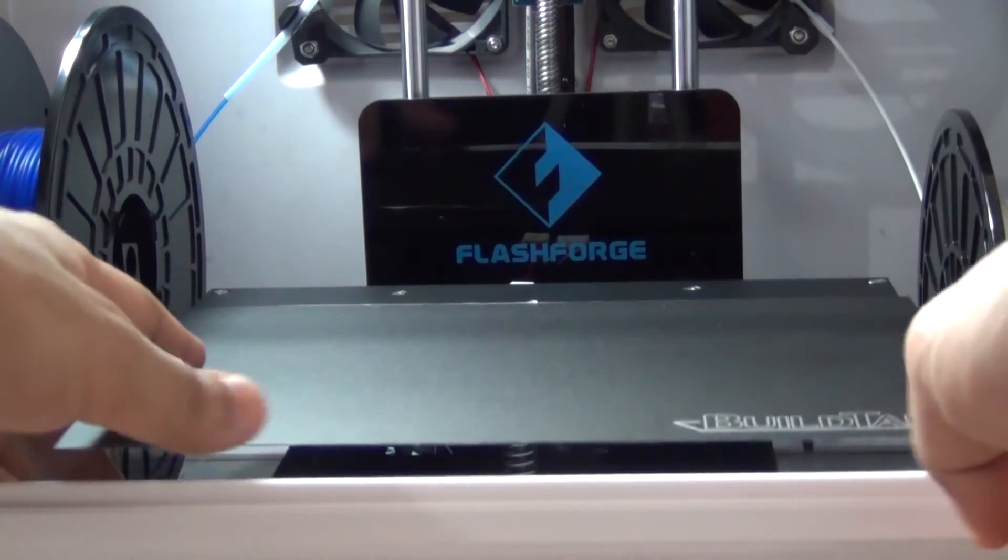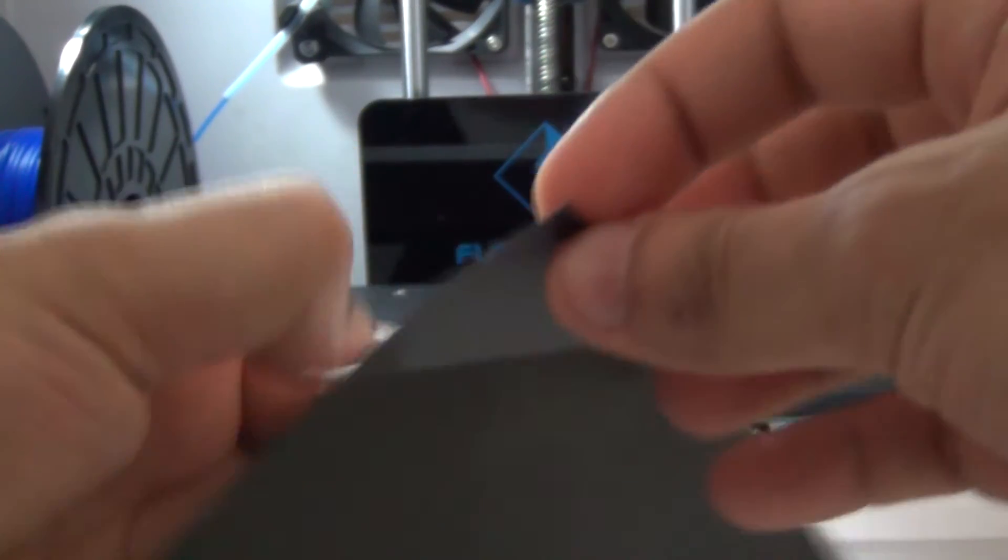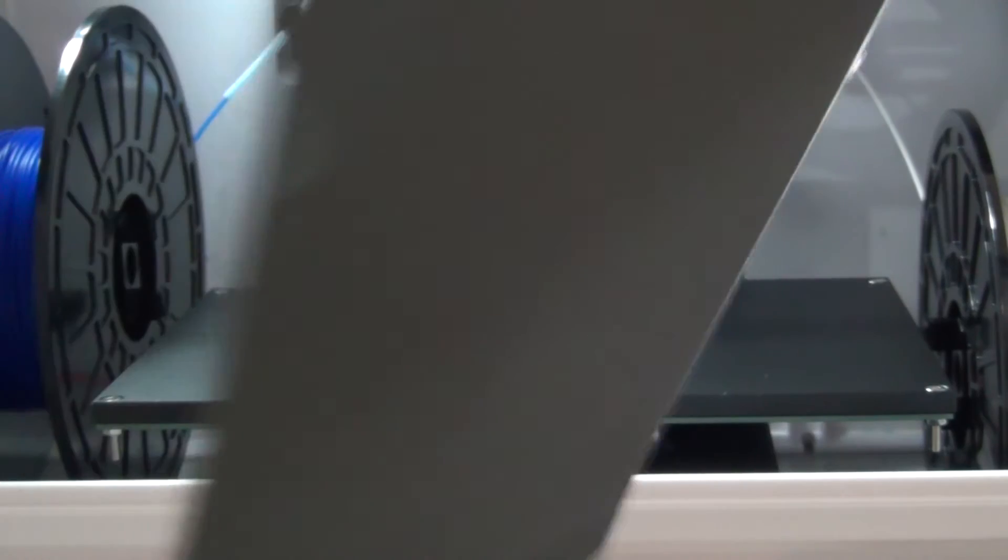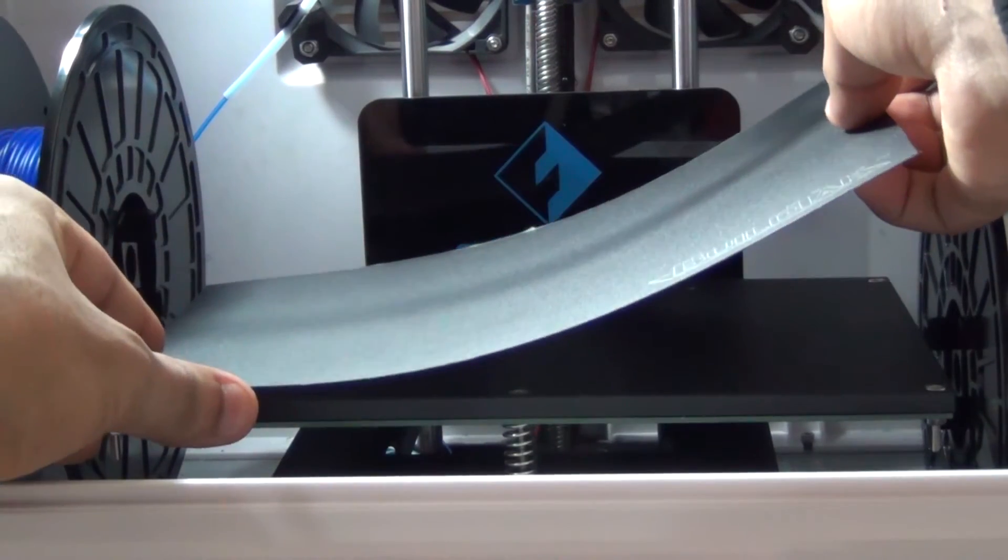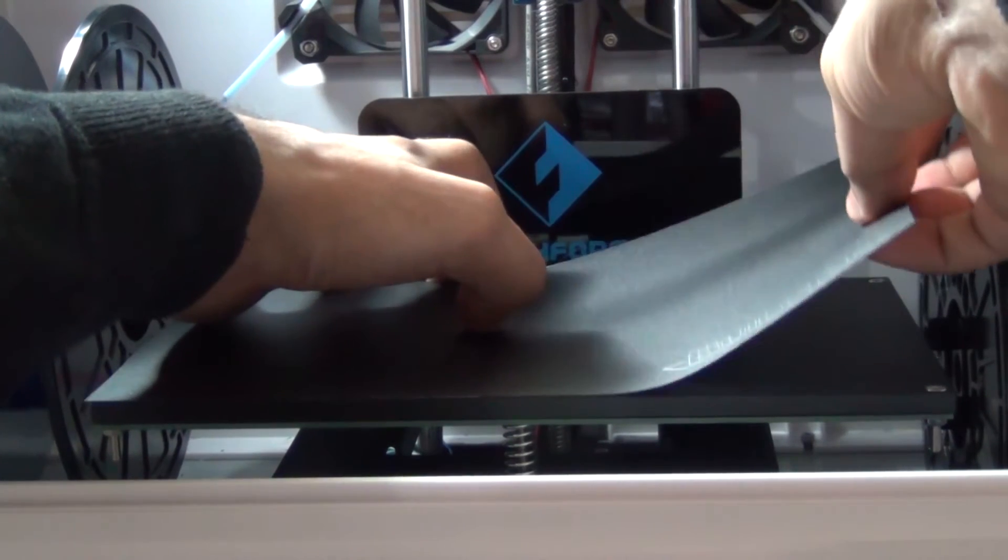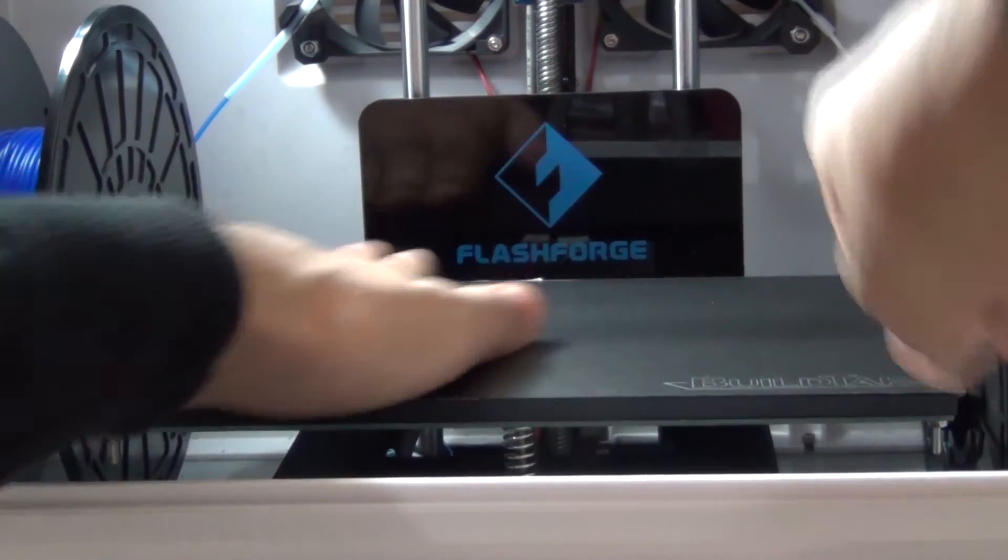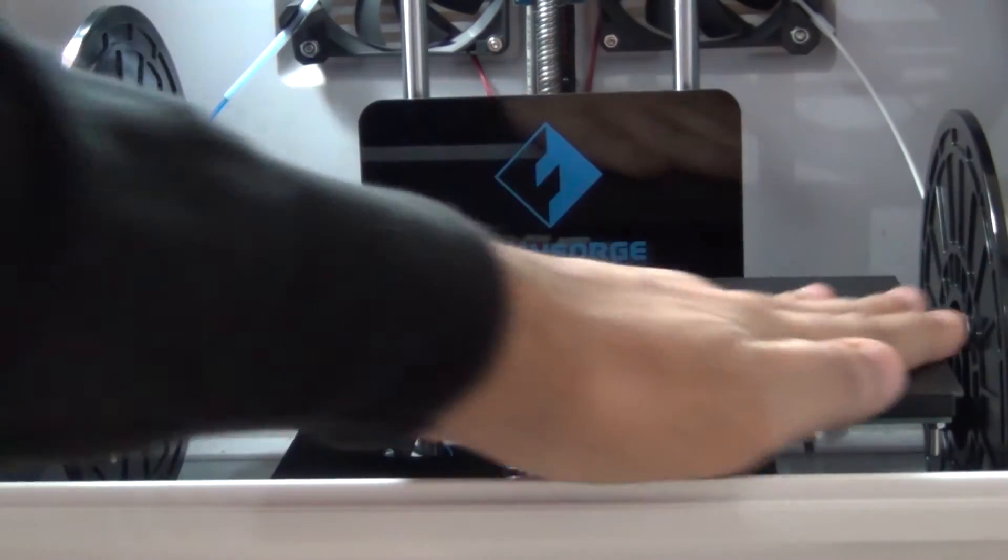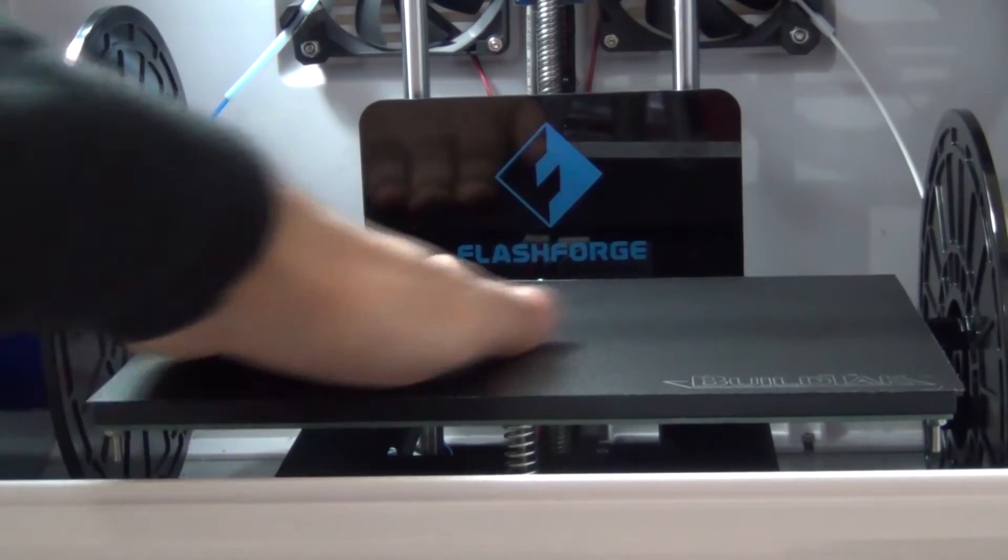So the next step is to get this onto the print bed. So the way to do that is you've got a white adhesive backing. You just want to carefully layer that on like so. It's literally as simple as that, no additional work, no nothing.